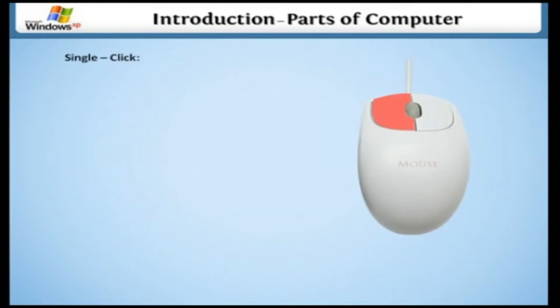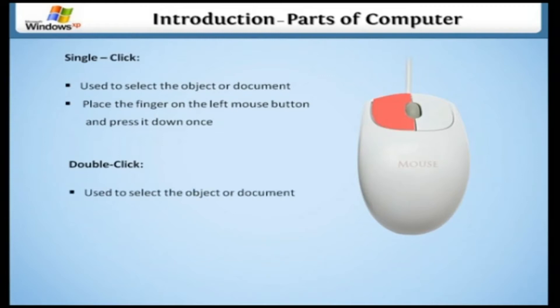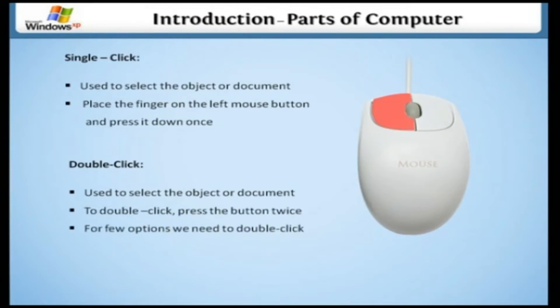Single click. This is used to select the object or document. If you want to do the single click, place your finger on the left mouse button and press it down once. Double click. This is also used to select the object or document. To do a double click, press the button twice. For a few options, we need to do the double click.